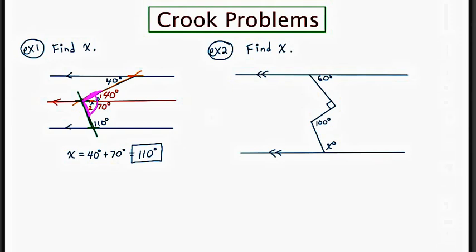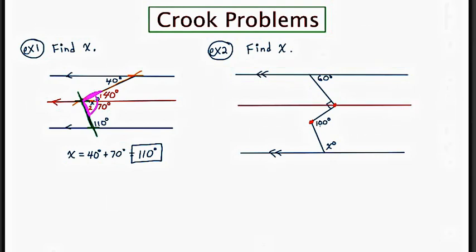In example two there are two bends in the transversal. I'm going to put my first dot at the first bend and my second dot at the second bend. Now I'm going to draw two lines — one through each dot — not just any old line, but a line parallel to the two existing lines. I'll put double arrows on both to indicate they're parallel to the existing lines.